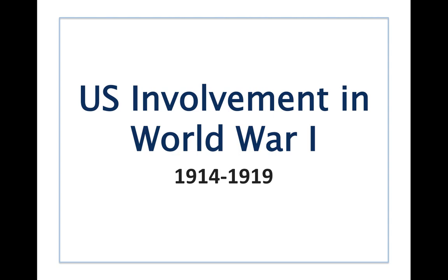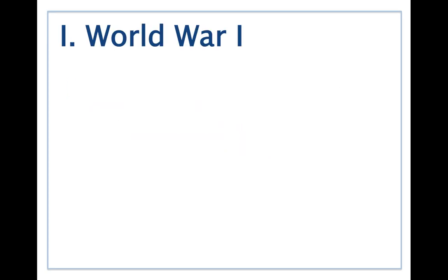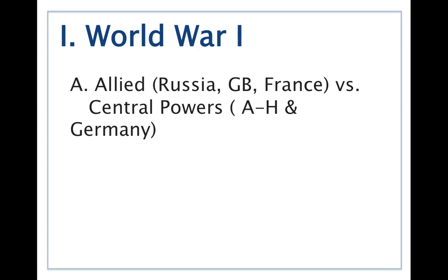The years 1914 to 1919 represent the years that this war was fought from start to finish, not necessarily the years that the United States was involved. World War I was a war fought between two systems of alliances. The Allied powers include Great Britain, France, and then later Italy, as well as Russia, and of course later the United States. Russia withdraws from the war in 1917 before it's over as a result of their own political revolution happening there.